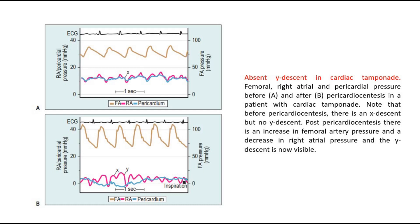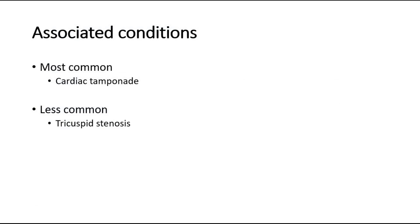Note that before pericardiocentesis, there is an X-descent but no Y-descent. Post-pericardiocentesis, there is an increase in femoral artery pressure and a decrease in right atrial pressure, and the Y-descent is now visible. Absent Y-descent is most commonly associated with cardiac tamponade. Sometimes it can be caused by tricuspid stenosis as well.